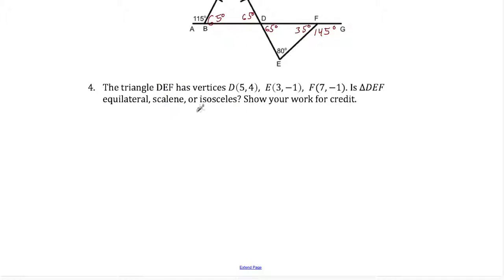Here we have triangle DEF. No need to write out the picture but we just want to find out if it's equilateral, scalene, or isosceles. With this we have to find all the side lengths so we need to use our distance formula. We're going to find distance of side DE and that is the square root of 5 minus 3 squared plus 4 minus negative 1 squared. That's going to be equal to 2 squared plus 5 squared, so that equals the square root of 29.